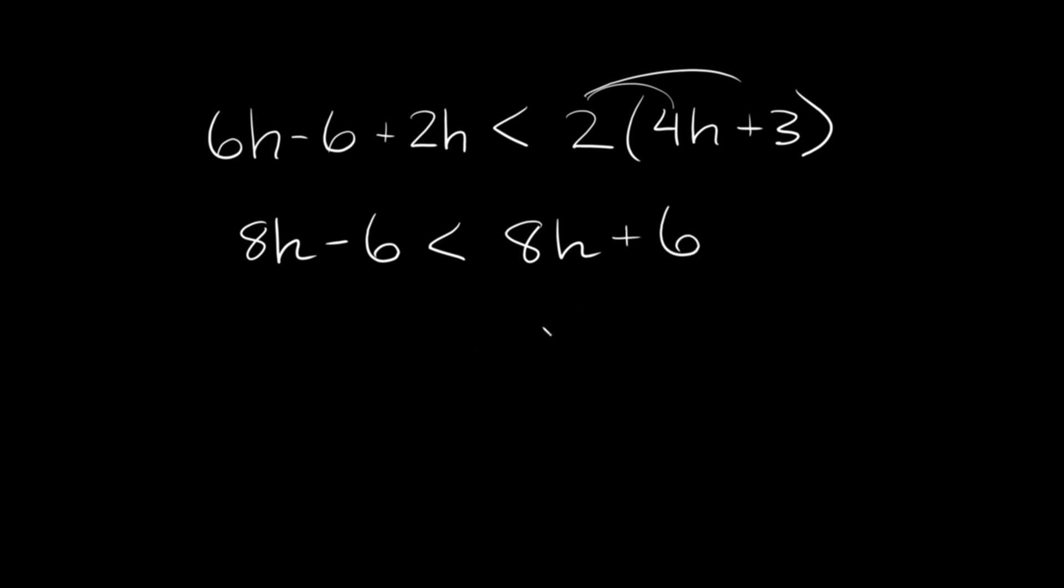So this is what we're left with and now you're going to see something kind of crazy happen. So again, we want to combine like terms. Let's move all the h's to the left side. So here we have positive 8h, so to move it to the other side we're going to subtract 8h and subtract 8h from there. Over here they cancel out, but over here, as you can see, they also cancel out. 8h minus 8h is just equal to 0. So then we're just left with negative 6 is less than positive 6.